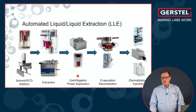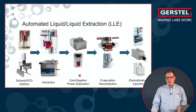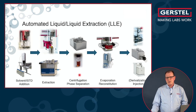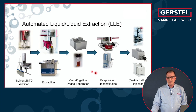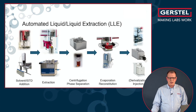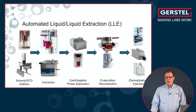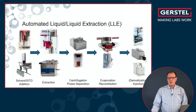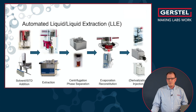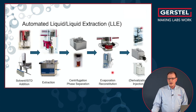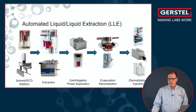Normally the extract phase is not suitable for direct injection. Maybe it needs to be concentrated or maybe derivatization needs to be done. Oftentimes you need to evaporate this extract phase to dryness or at least reduce it. This can be done in our so-called MVAP module — evaporation under controlled shaking, heating, and vacuum. Then you can reconstitute your extract and either derivatize or inject to LC or GC instruments.